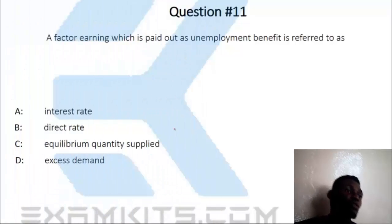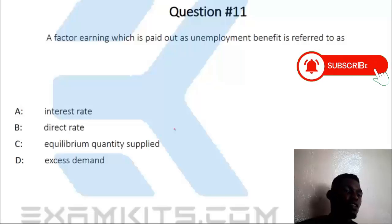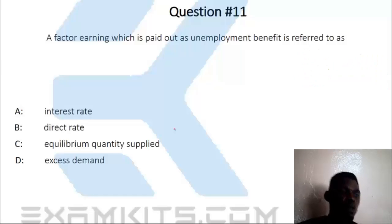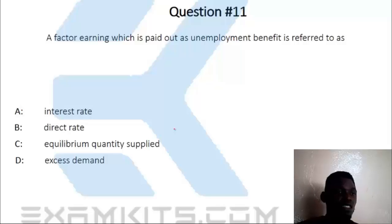Question 11. The factor of earning which is paid out as an unemployment benefit is referred to as: A. Interest rate. B. Direct rate. C. Equilibrium quantity supply. D. Excess demand. The correct answer is interest rate.